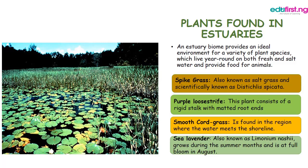Now let's take a look at plants found in the estuary. An estuary provides an ideal environment for a variety of plant species which live year-round in both fresh and saltwater and provide food for animals. Examples include spike grass, also known as salt grass; the Spartina plant, which consists of a rigid stick with matted root systems; smooth cord grass; and sea lavender, also known as Limonium nashii.